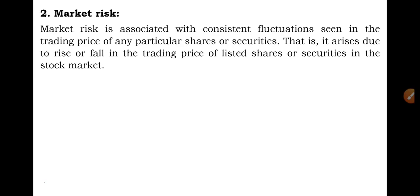Market risk is caused by the herd mentality of investors — the tendency of investors to follow the directions of the market. Hence, market risk is the tendency of security prices to move together. If the market is declining, then even the share prices of good performing companies will fall. Market risk constitutes almost two-thirds of the total systematic risk. Therefore, sometimes the systematic risk is also referred to as market risk, because two-thirds of the portion is acquired by this market risk.